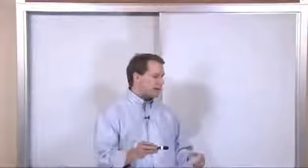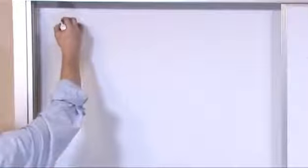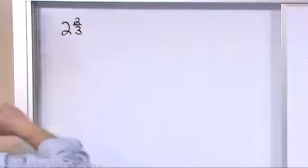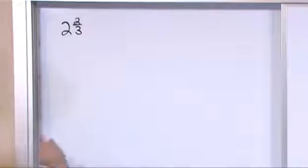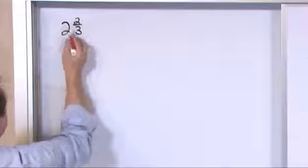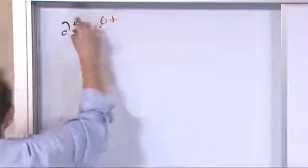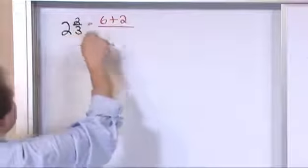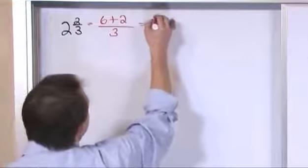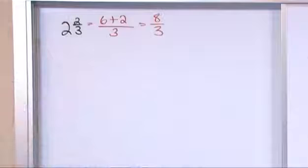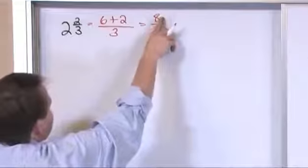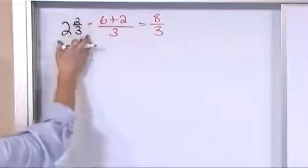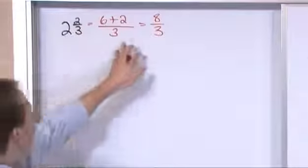So how do you convert them? Let's say you have the mixed fraction two and two thirds and you want to convert that to improper. The easiest way is to work through examples. You take the bottom number and multiply it by the whole number in front: two times three is six. Then you add the numerator, which is two, and keep the same denominator of three. So six plus two is eight thirds. This improper fraction is absolutely equivalent to two and two thirds.